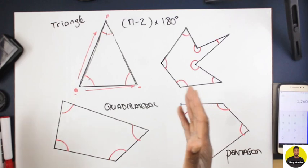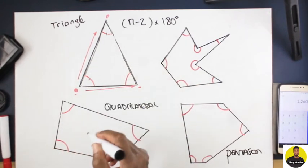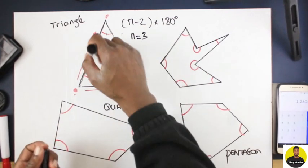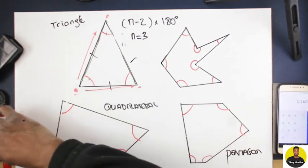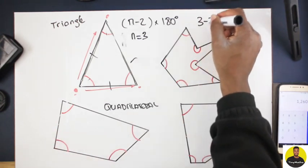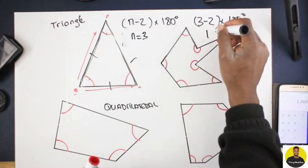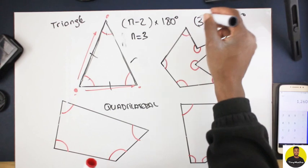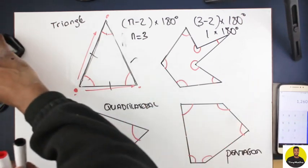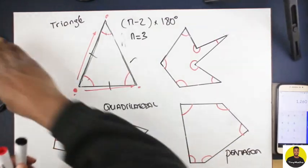When you have a triangle, whichever angle you start from, the only way to reach another angle is to go along a straight line, and it makes no difference — it doesn't create any other triangles. So you have only one triangle. The triangle has 3 sides, so n equals 3. Applying the formula: n minus 2 becomes 3 minus 2 times 180 degrees. That's 1 times 180 degrees, which equals 180 degrees — which of course is the sum of all angles within a triangle.